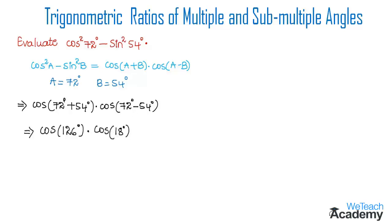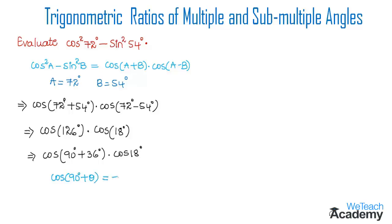Here we can write cos 126° in the form of 90° + θ. Writing it out, we get cos(90° + 36°) · cos 18°. This is in the form of cos(90° + θ), and using the formula cos(90° + θ) = -sin θ, we get -sin 36° · cos 18°.